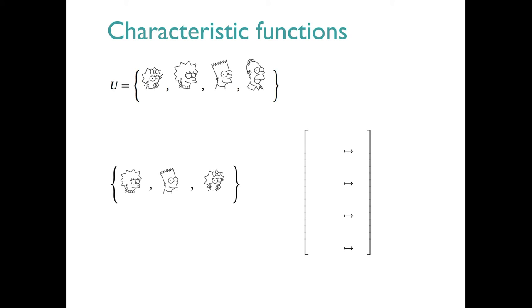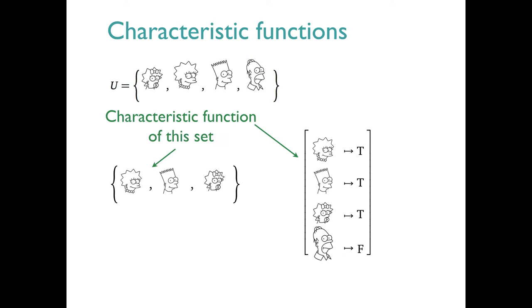We can go in the reverse direction as well. That's what the notion of a characteristic function gives us. To do this, though, we need to know what the universe is. More precisely, what the domain of the function is. So, for this example, let's assume that the domain is this set u of Simpsons. We start with this set containing just Lisa, Bart, and Maggie. To create the characteristic function, we map all those entities to true. And here's where we need to know the domain of the function. For all the entities in the domain that aren't in the original set, here just Homer, we need to map them to false to complete the function.